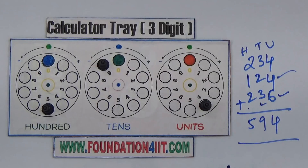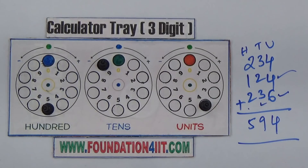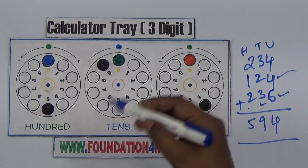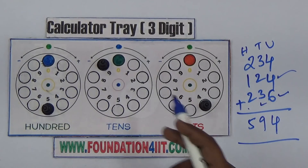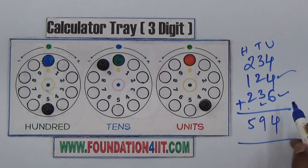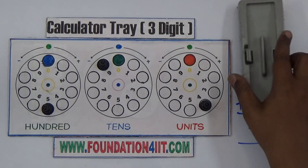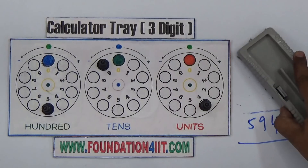This is especially for primary and pre-primary — they can learn in a fun way. Not only additions: if you move anti-clockwise, that is subtraction. Clockwise is addition, anti-clockwise is subtraction. You can also take one subtraction example.